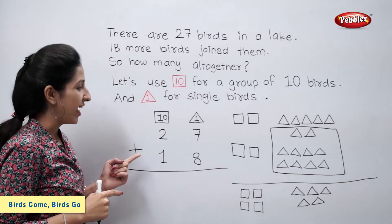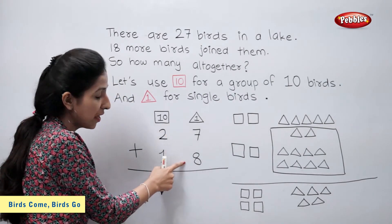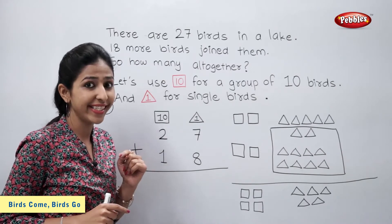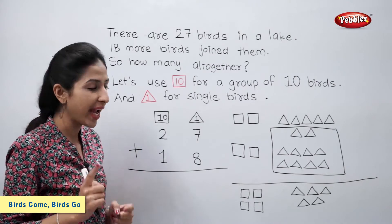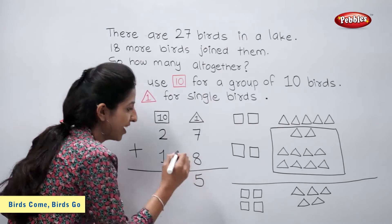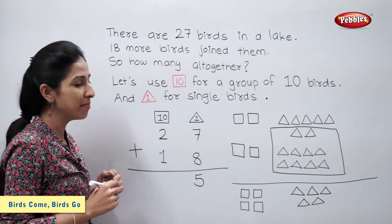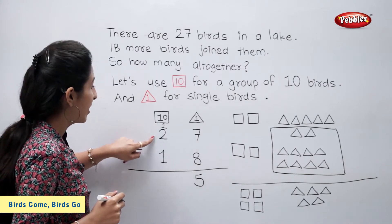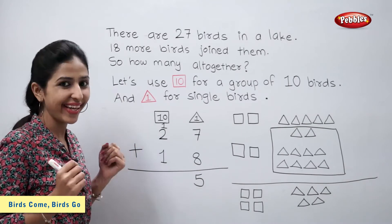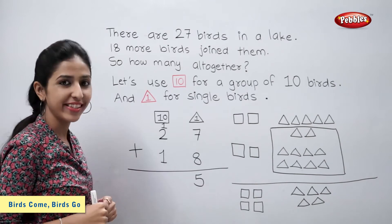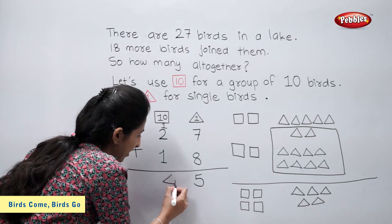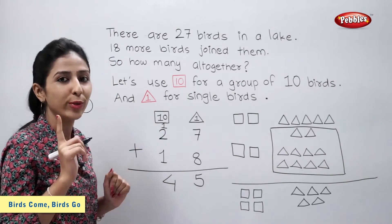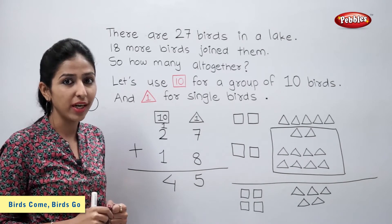Let's solve it this way. We can say that 7 plus 8 is equal to 15. Now we know 15 means 1 ten and 5 ones. So let's write 5 in the ones column and carry 1 ten forward to the tens column. Now let's add the tens column: 1 plus 2 plus 1 is equal to 4. Now we have 4 tens and 5 ones, so the number is 45. There are 45 birds altogether.